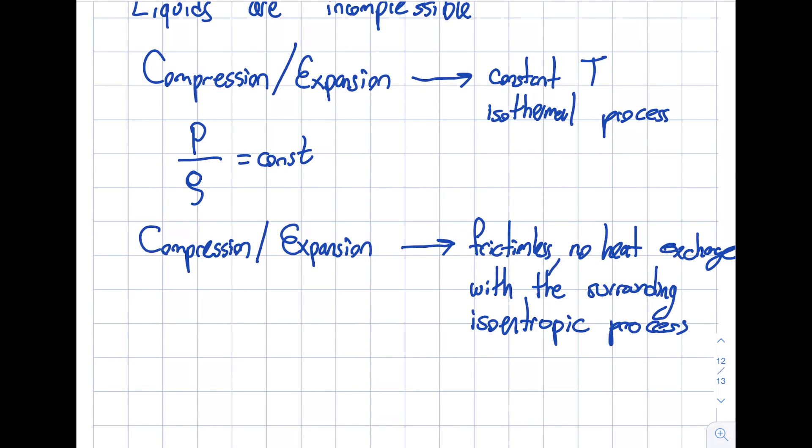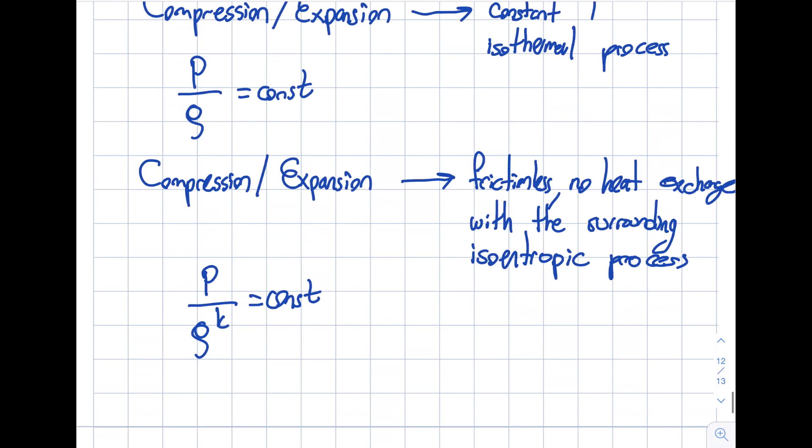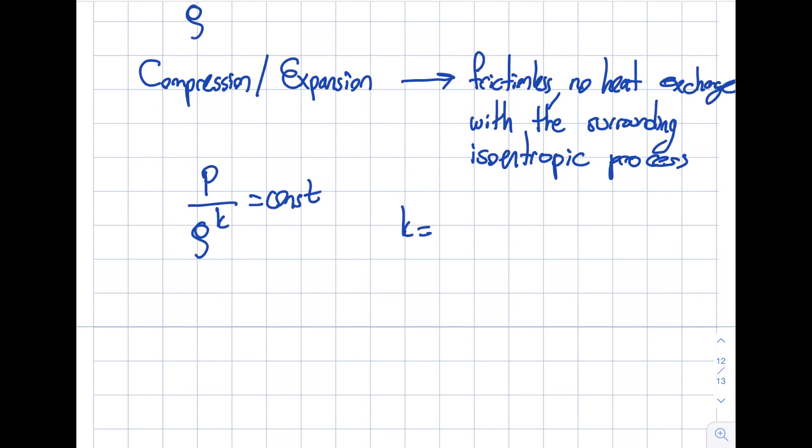In this case, this is characterized by P over rho to the power of k is equal to a constant, as opposed to isothermal where k is equal to one, basically the way that it's been set up.